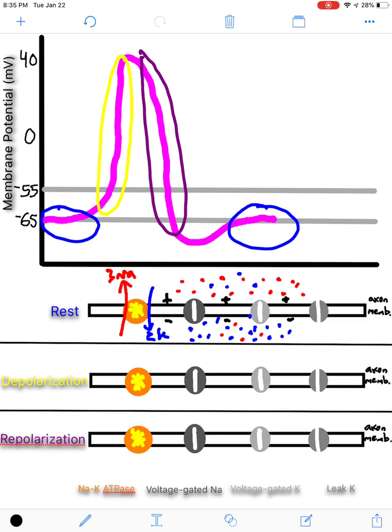And part of the reason why it's negative on the inside, despite having all these positive potassiums, is because every time you bring in two potassiums, you pump out three sodiums. So technically, with every pump, you're losing a net of one positive ion. And the other aspect that influences the negativity inside the cell is the fact that there are a lot of negatively charged proteins.